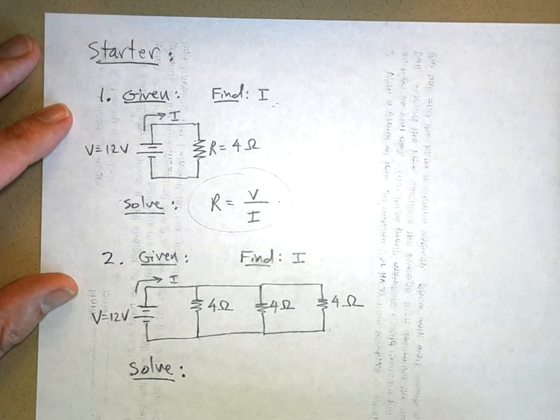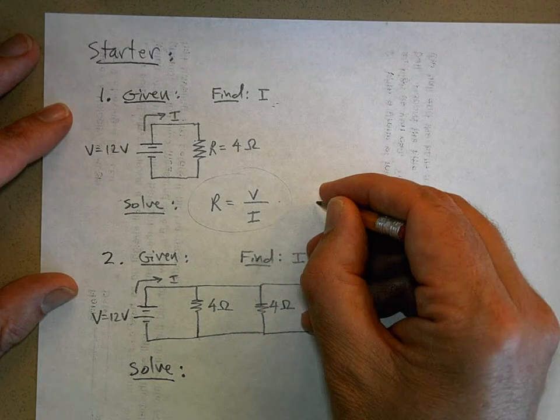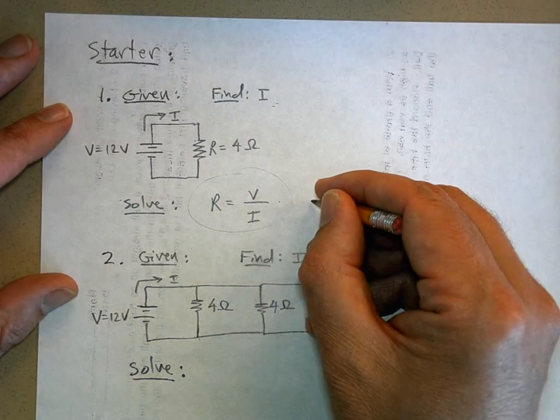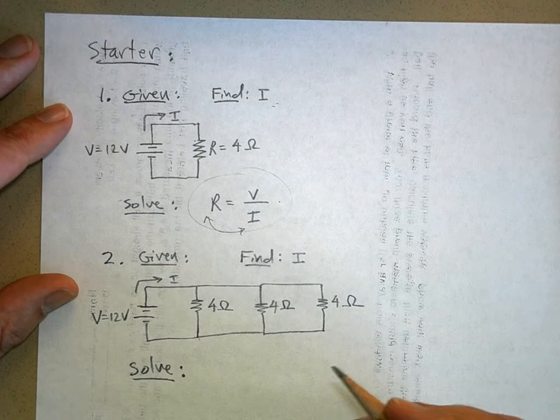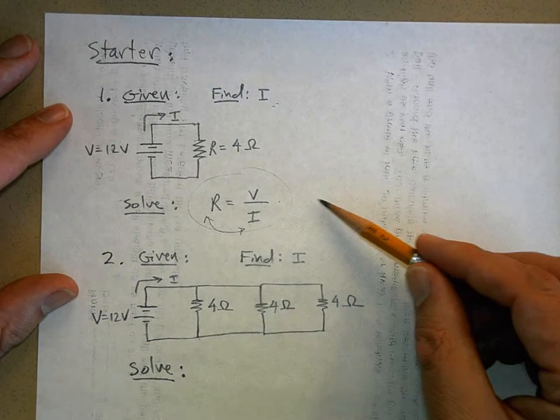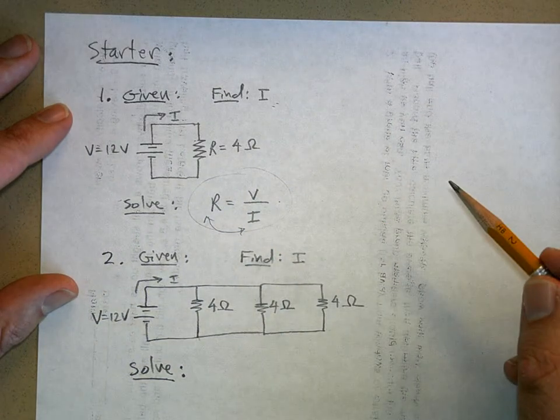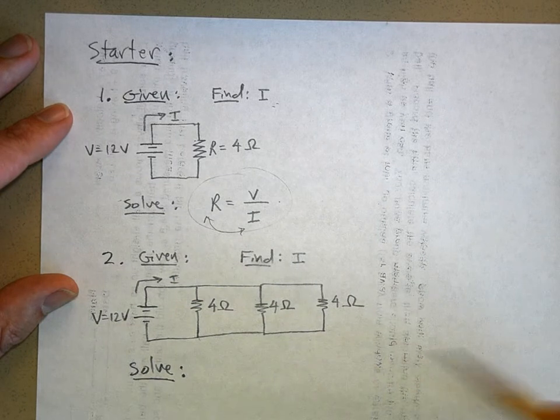This is my basic equation, but I want to find out what the current is. So one thing I can do is switch these guys. If you multiply both sides by current and then divide both sides by resistance, you get current equals voltage divided by resistance.